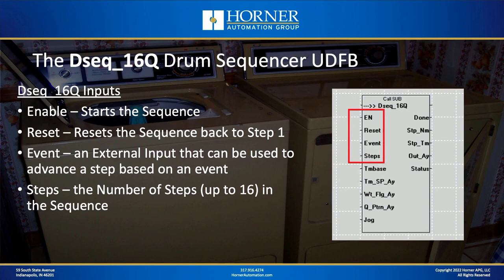Now let's talk specifically about the drum sequencer user-defined function block designed for import into any variable-based advanced ladder project in Seascape. We've named it dseq_16q, indicating it's a drum sequencer with 16 outputs and 16 steps. You can have up to 16 steps in the sequence, and each step can control up to 16 outputs. To advance from step to step, it can be time-based, event-based, or each individual step can be one or the other or both. Any user-defined function block has inputs and outputs — let's go through those.